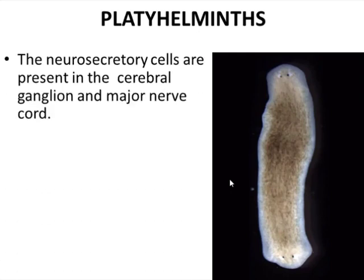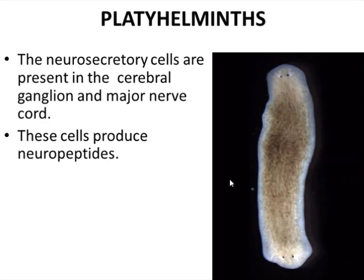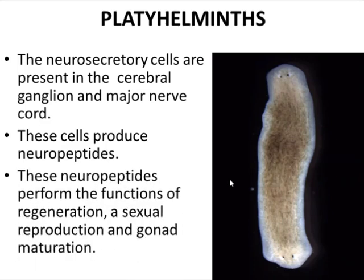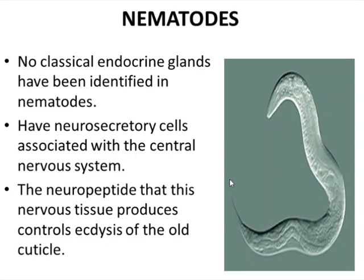The next group is the Platyhelminthes. The Platyhelminthes have neuro secretory cells in the cerebral ganglia and major nerve cord. These cells produce neuropeptides that perform the functions of regeneration, asexual reproduction, and gonad maturation. These neuropeptides are produced by neuro secretory cells present in the cerebral ganglia or the major nerve cord.